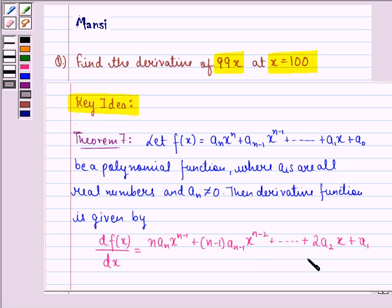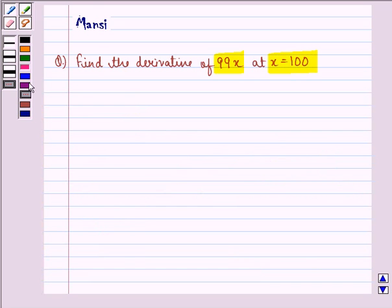So this is our key idea to the question. Using this theorem, we find out the solution to this question. So let us see the solution now. First of all, let f(x) be equal to 99x.